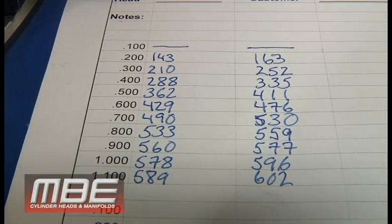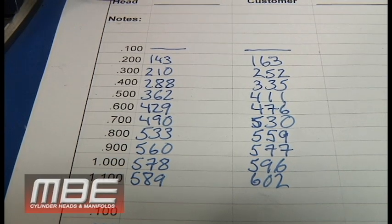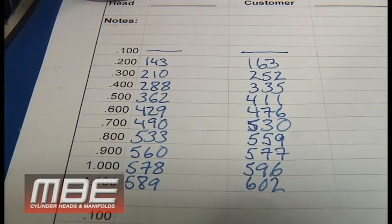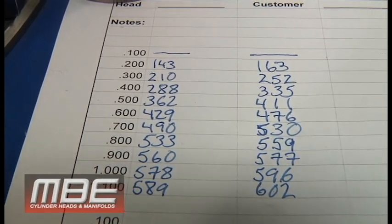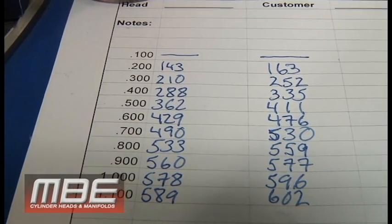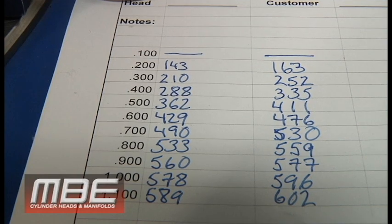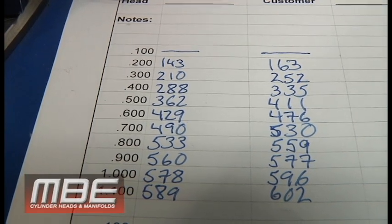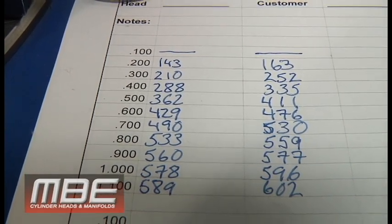Now you've seen the results. We're talking as much as, like on a 632, this could be as much as 60 foot-pounds of torque, 100 horsepower, all because the valve was not designed correctly. We spend thousands of hours on this to assure that we don't have these issues here at MBE.